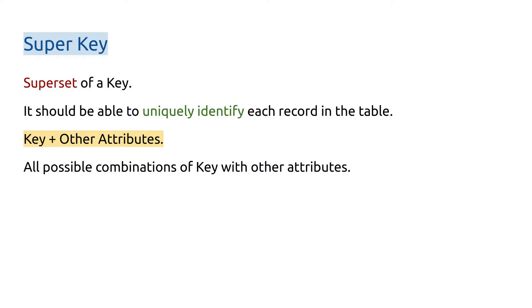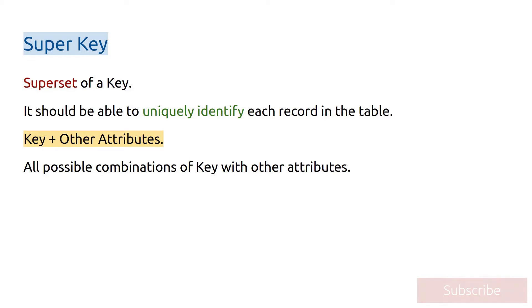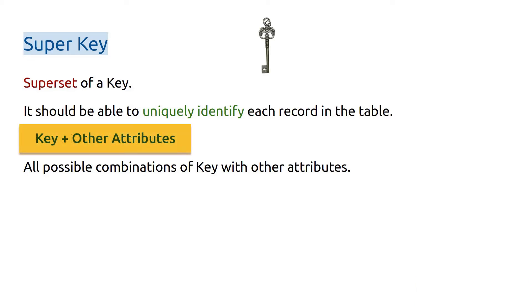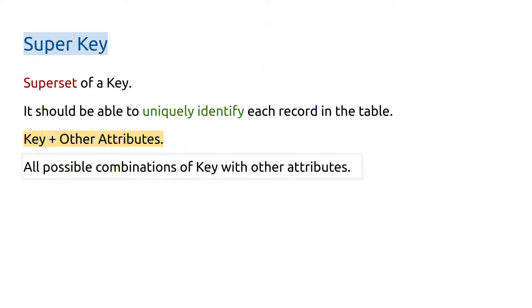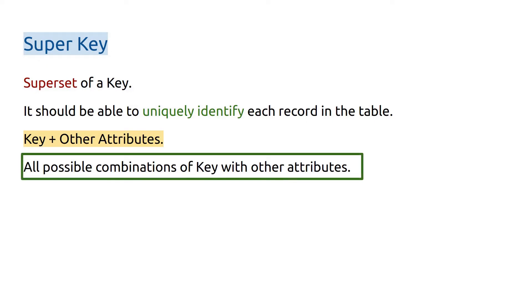Now let's understand the concept of super key. It is a superset of a key which should be able to uniquely identify a record in the table, which means it is the key plus other attributes. Note the difference: super key is key plus any other attribute or attributes from the table — in other words, all possible combinations of the key with other attributes.